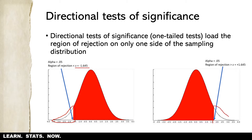We could do the same thing on the other side of the distribution — load all 0.05 of the area on the right side — and in that case we would need a z-score that exceeds positive 1.645. One thing you're probably noticing is that when we load the region of rejection on one side, it doesn't show up on the other side. So one downside to a directional test is that if you observe a sample mean that is an extreme score on the other side of the sampling distribution, you will never be able to reject the null hypothesis.